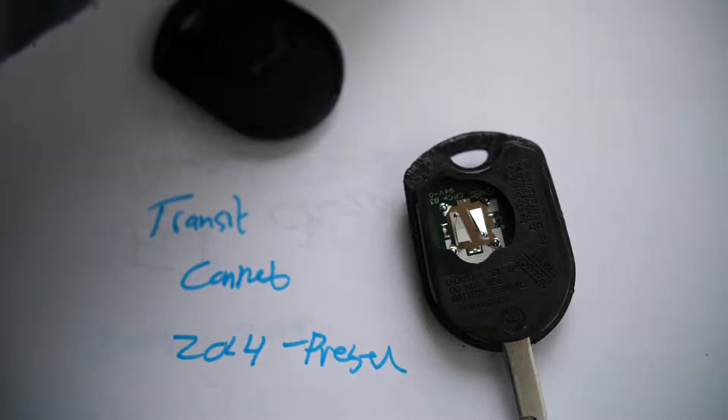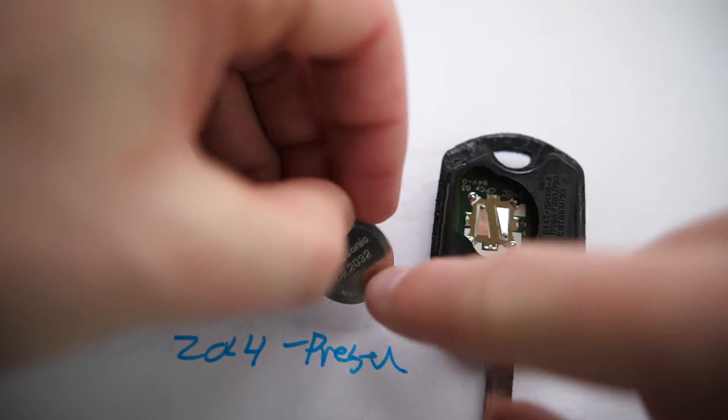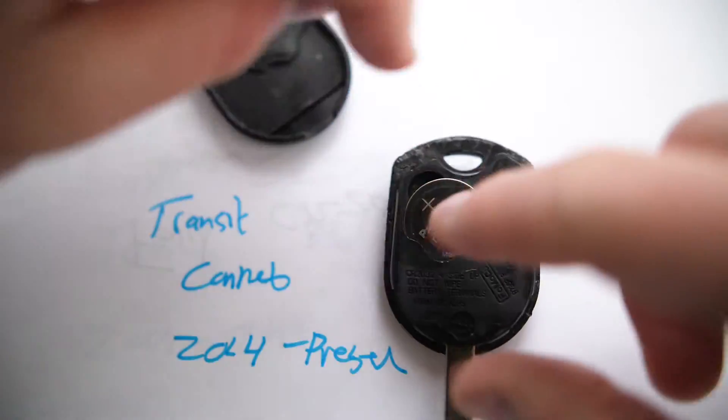And when you replace this battery, just make sure that you replace it with the positive side facing towards you. The positive side has, of course, the lettering on it and the plus sign. So go ahead and put a new CR2032 battery right there.